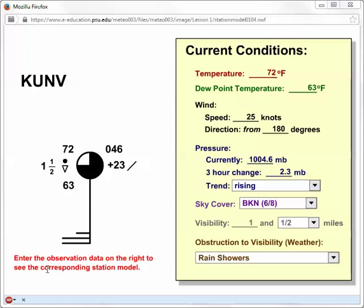We can manipulate this station model tool as it's completely interactive, so we can change the various types of data. For example, we can change temperature from 72 to 75 and we can see that changes the station model here. This number changed to 75 because that's the temperature in the upper left-hand corner of the station model.